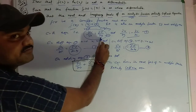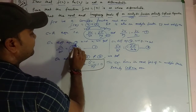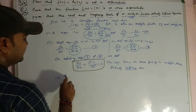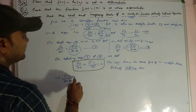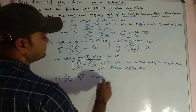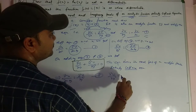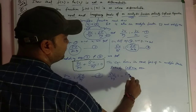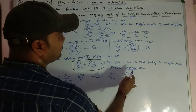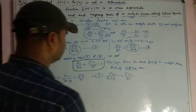अब v के लिए: यहाँ हम equation 1 को y के respect में differentiate करेंगे, और equation 2 को x के respect में। On differentiating equation 1 with respect to y, हमें मिलेगा del²u upon del x del y = del²v upon del y²। इसको equation 5 मान लेते हैं। जब equation 2 को x के respect में करेंगे: del²u upon del y del x = minus del²v upon del x², इसको equation 6 मान लेते हैं।